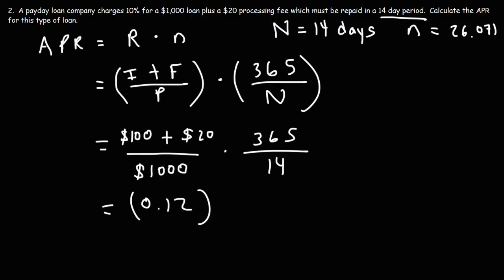And if they do this every two weeks, they can do this 26.071 times in a year. So, for $1,000 they can collect $120 every two weeks. You times that by 26, they can collect $3,120 in a year just by using $1,000. So, that's more than a 300% return. But let's get the exact figure. So, if we multiply 0.12 by 26.071, the APR is 3.1285. Now, if we multiply that by 100%, the APR in this example is 312.85%.